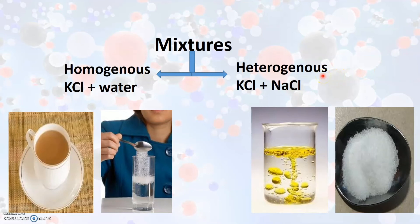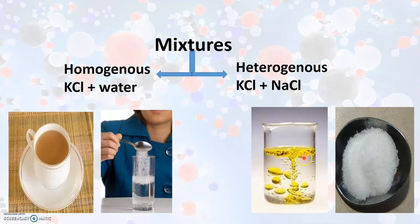In the case of a heterogeneous mixture, it has a varying proportion, or different composition throughout the sample — we can also visibly make out a difference between the substances present. 'Hetero' means different. For example, when oil is mixed with water, it has a different or varying composition because it is not uniform throughout. Oil is present in greater amounts in some places and less in others, so we can easily make out the difference. Therefore, it is a heterogeneous mixture.